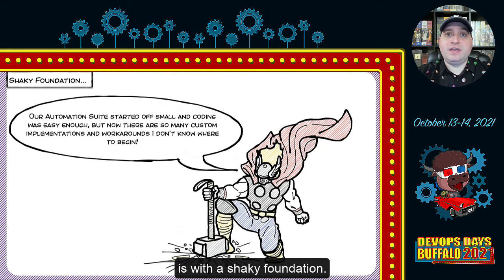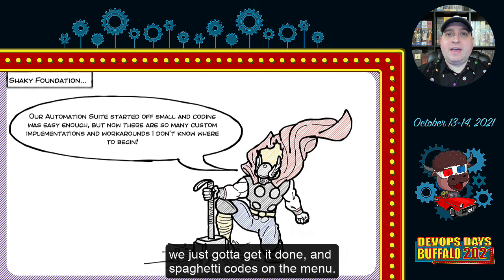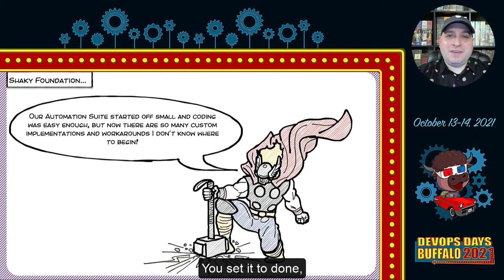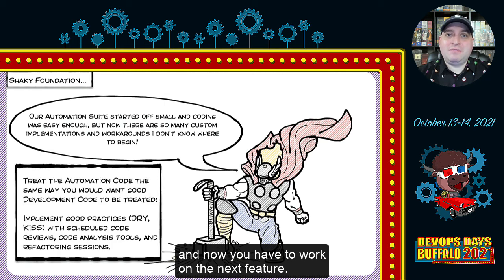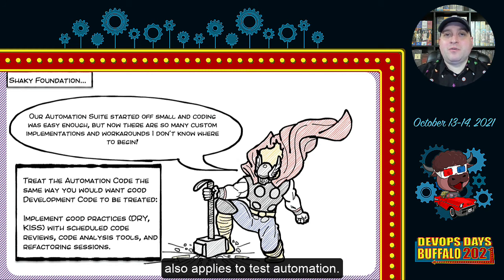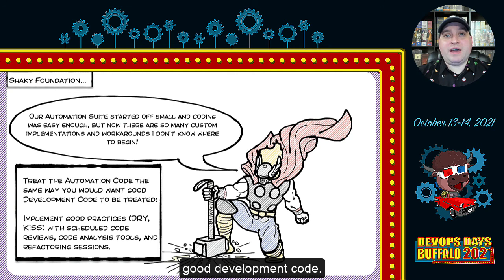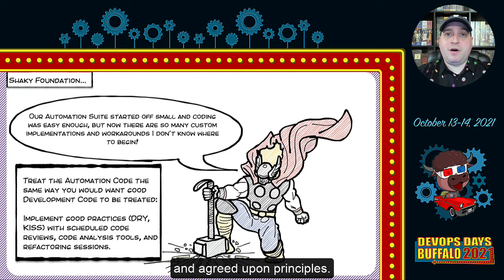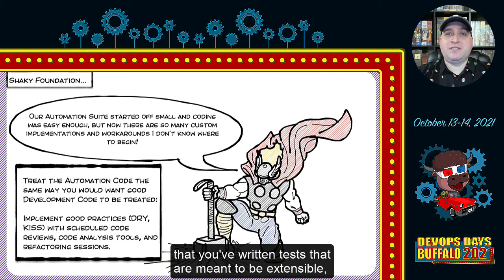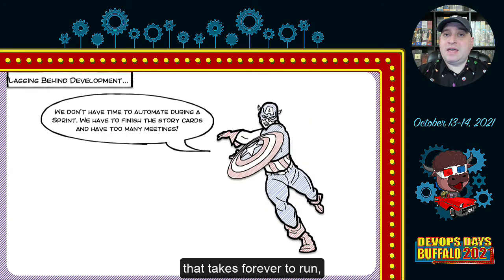Another area of common failure is a shaky foundation. We've all faced a looming deadline where spaghetti code ends up on the menu — you set it to done and kick the can down the line, only to face another deadline on the next feature. The same applies to test automation as it does to development code. You want an architectural runway as well as practices for your team that include code reviews, refactoring sessions, and agreed-upon principles, so that regardless of who is writing the test automation, it's the same level of quality — tests that are extensible with reusable functionality, not a giant bloated suite that takes forever to run.